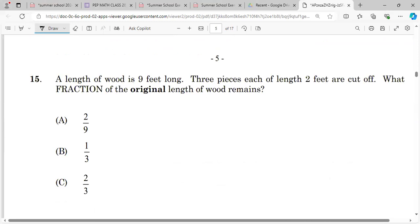A length of wood is 9 feet long. Three pieces, each of length 2 feet, were cut off. What fraction of the original length of wood remains? So it's 9 feet long. We're gonna cut off three pieces of 2, so that's 6 feet.